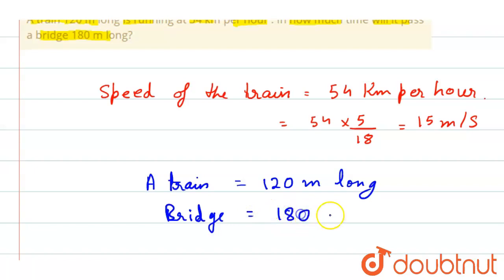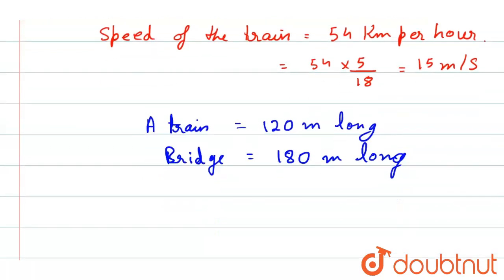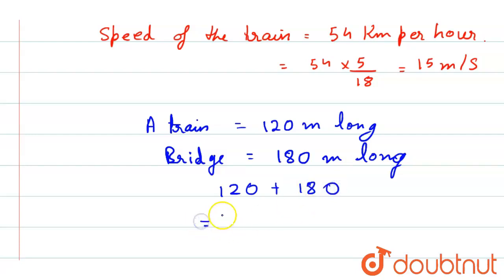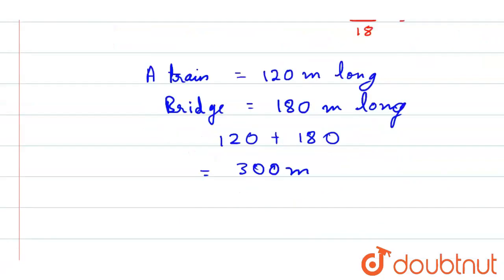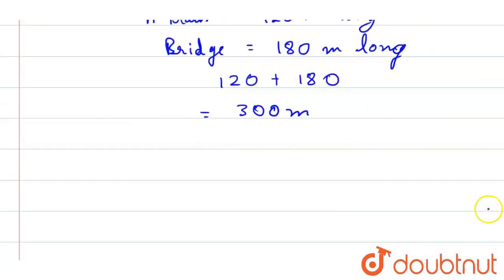So now if we add them up, that will be 120 plus 180 equals 300 meters. Now we can write time taken.